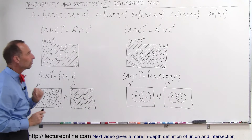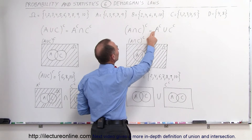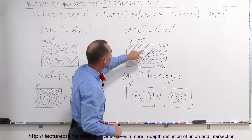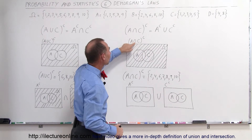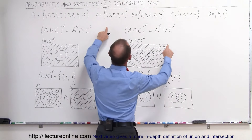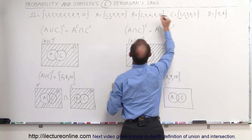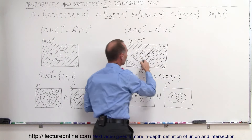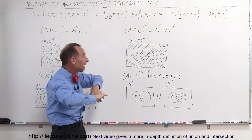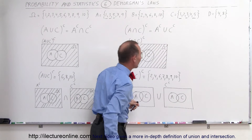How about the second De Morgan Law? De Morgan claims that the complement of the intersection of A and C is equal to the complement of A union the complement of C. The intersection of A and C is the area where portions are common. If you look at the numbers, what are common between A and C? Well, 1 is common, 3 is common, and 5 is common. So the elements that go in there would be 1, 3, and 5. Those are common to both A and C, and the complement of that would be everything else outside of that. De Morgan claims that is equal to the complement of A union complement of C.